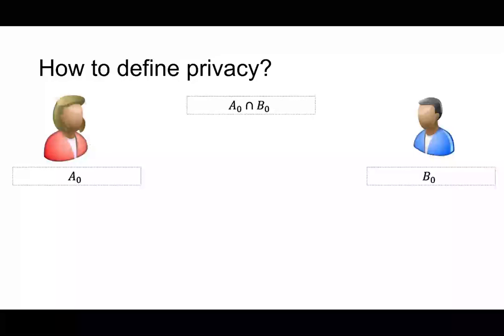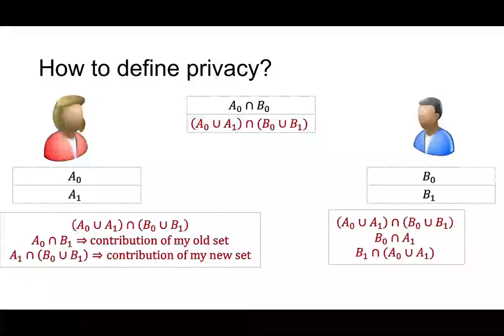Alice and Bob already get A0 and B0, and they already get an intersection of A0, B0, let's assume that. And for a new set, A1 and B1, they are going to compute this A set intersect with B set, and nothing else. So this is our privacy definition, and we can explore it a little bit.